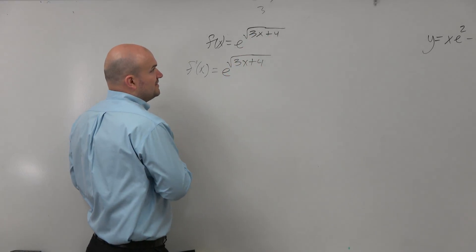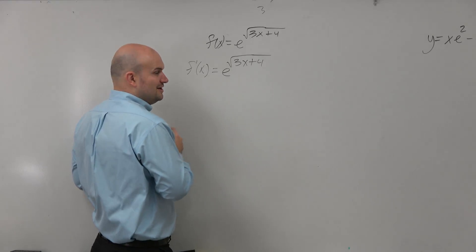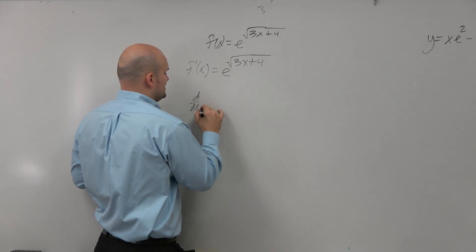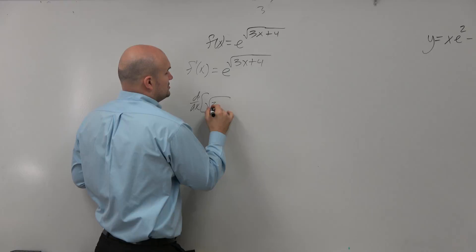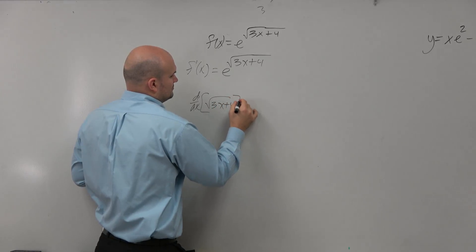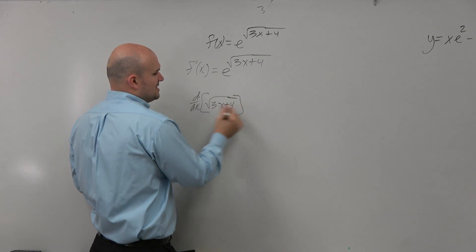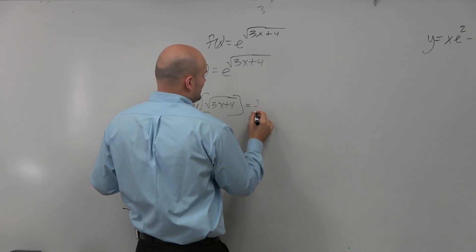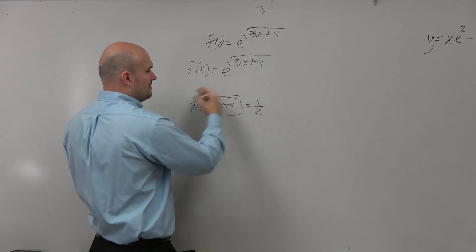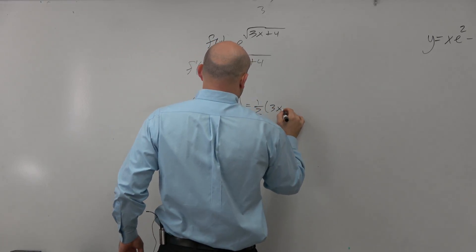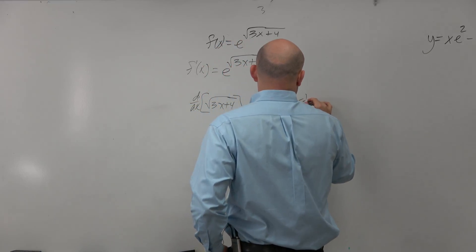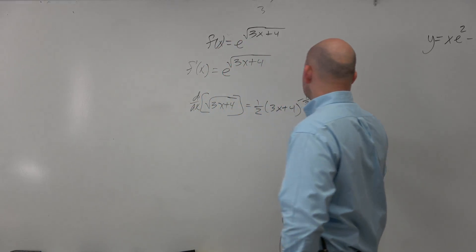The derivative of the inside function is not just some easy derivative, so I'm just going to do that separately. We can rewrite that as a 1/2 power. So we can bring down the 1/2 times 3x plus 4 to the negative 1/2 and then times 3.